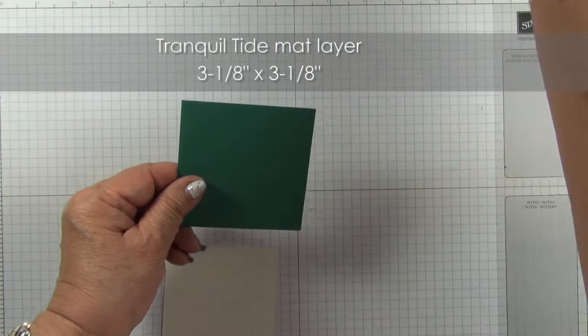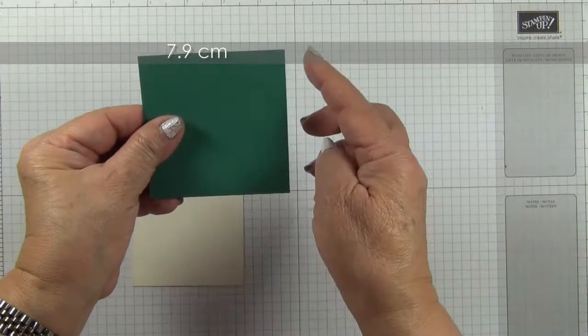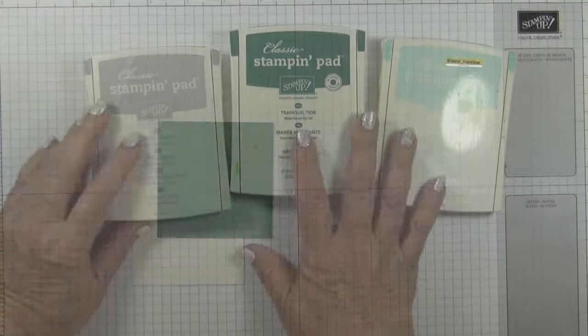And you need a matte layer in Tranquiltide which is three and one eighth by three and one eighth inches. In metric that will be 7.9 by 7.9.